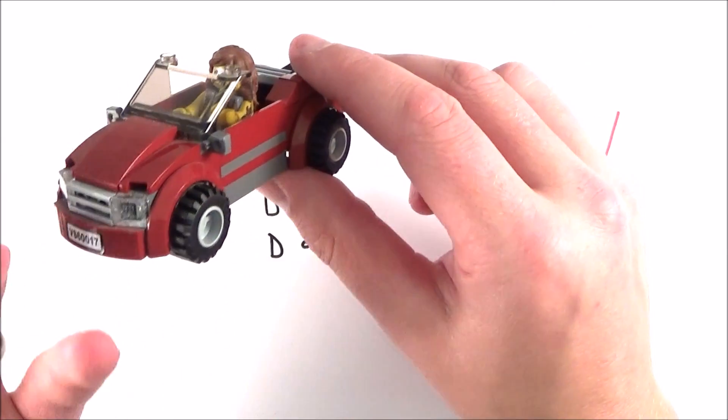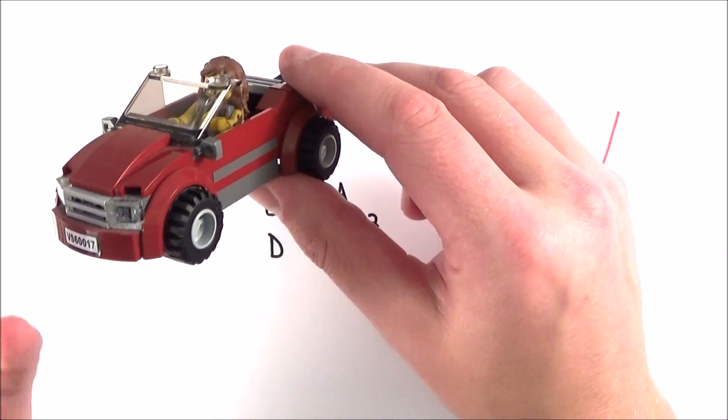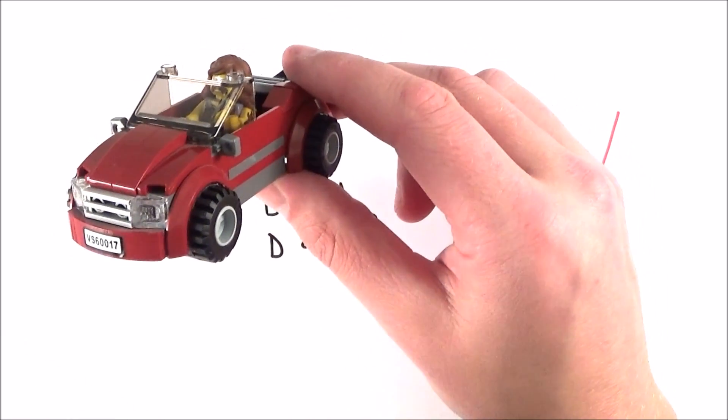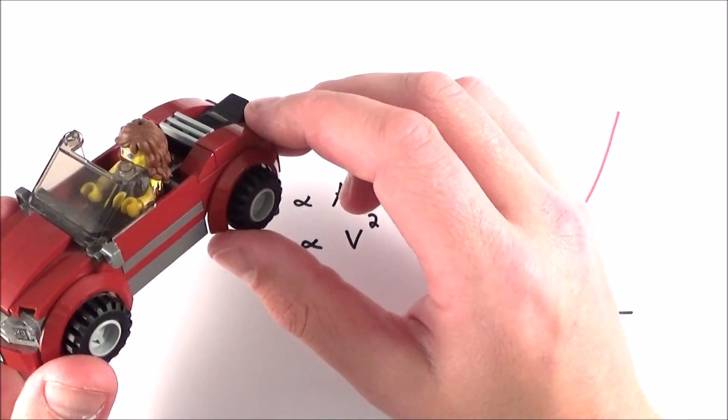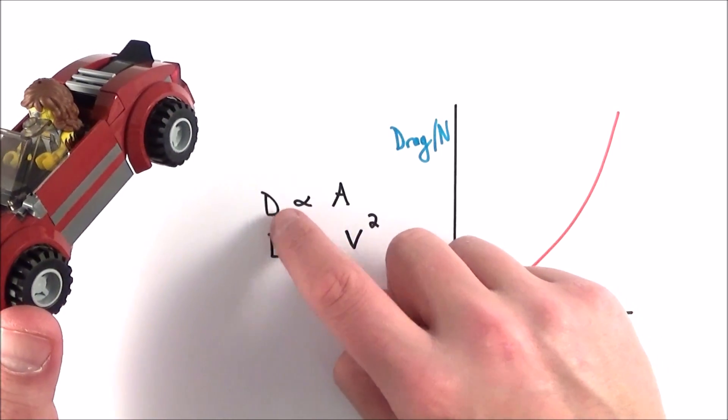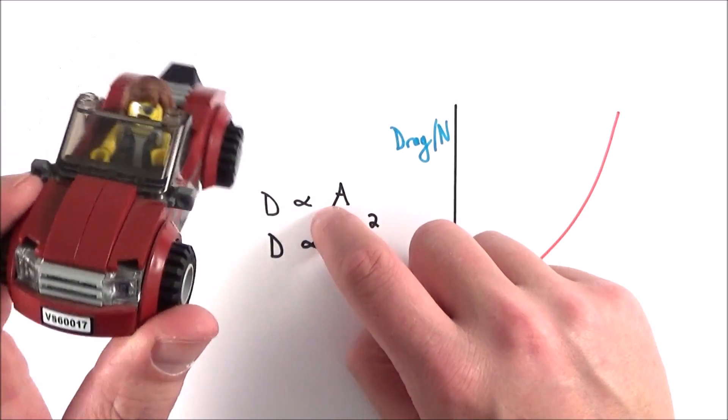So to conclude, this drag force, which we often call air resistance if it's in the air or water resistance if it's in the water, is really dependent upon two factors. First of all, the drag force is proportional to the surface area of that object.